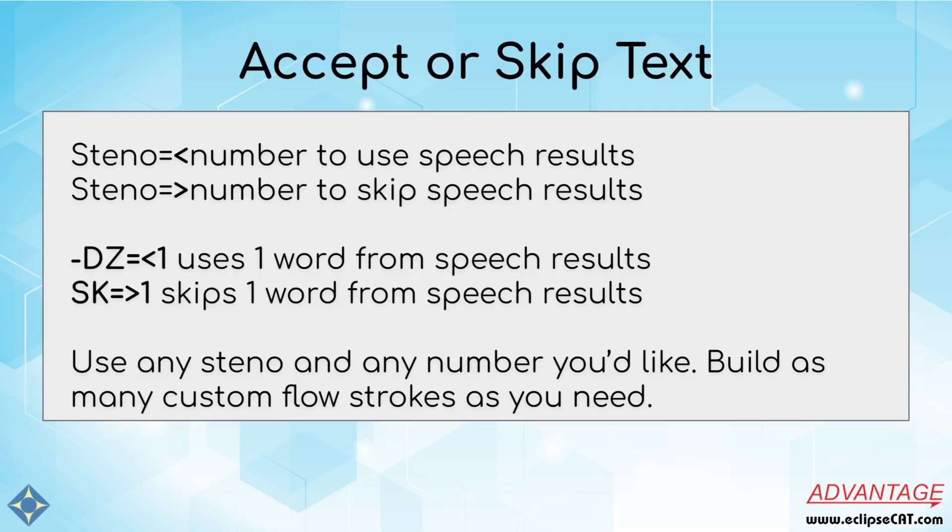You can use steno equals less-than followed by a number to use that many speech results. Or you can use steno equals greater-than a number to skip that many speech results. For example, you can use DZ equals less-than one to use one word from the speech results. You could change that number to 3, 5, 7, 10, or anything else to use that many results instead.